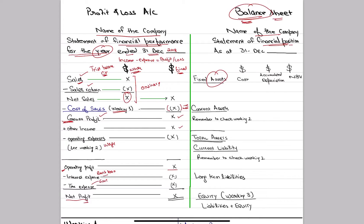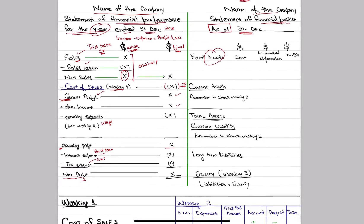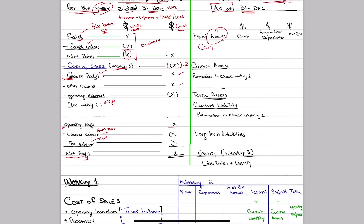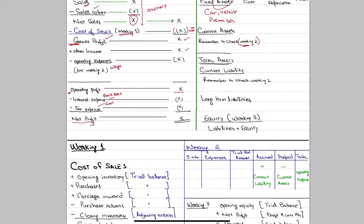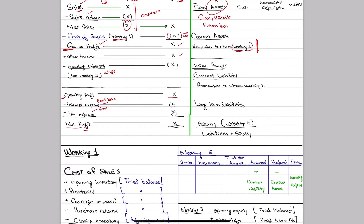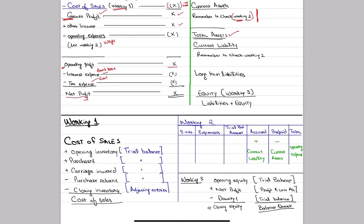The balance sheet is a statement of financial position — what is the balance in every account? First, we have fixed assets: cars, vehicles, trucks, premises, buildings — as discussed in lecture number one. We also have cash, bank, and current assets. Fixed assets plus current assets give total assets. Then we have current liabilities, creditors, long-term liabilities such as loans, and finally equity, which shows the owner's share. This is working number three.